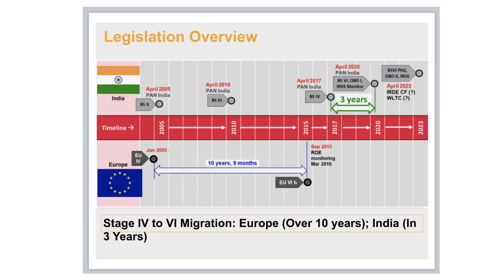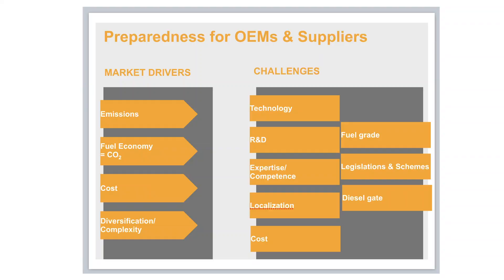Looking at legislation — in Europe, going from Euro 5 to Euro 6 took nearly 11 years, whereas in India we will be leapfrogging this within three years, which we should all be proud of. The drivers of regulatory change include emissions, fuel economy, cost, and complexity. Challenges include technology, competence, cost, fuel grade, legislation clarity, and the experiences from the diesel gate scandal. When it comes to cost — for upgrading from Euro 4 to Euro 6 — both OEMs and automotive suppliers have invested in excess of $10 billion for this change.